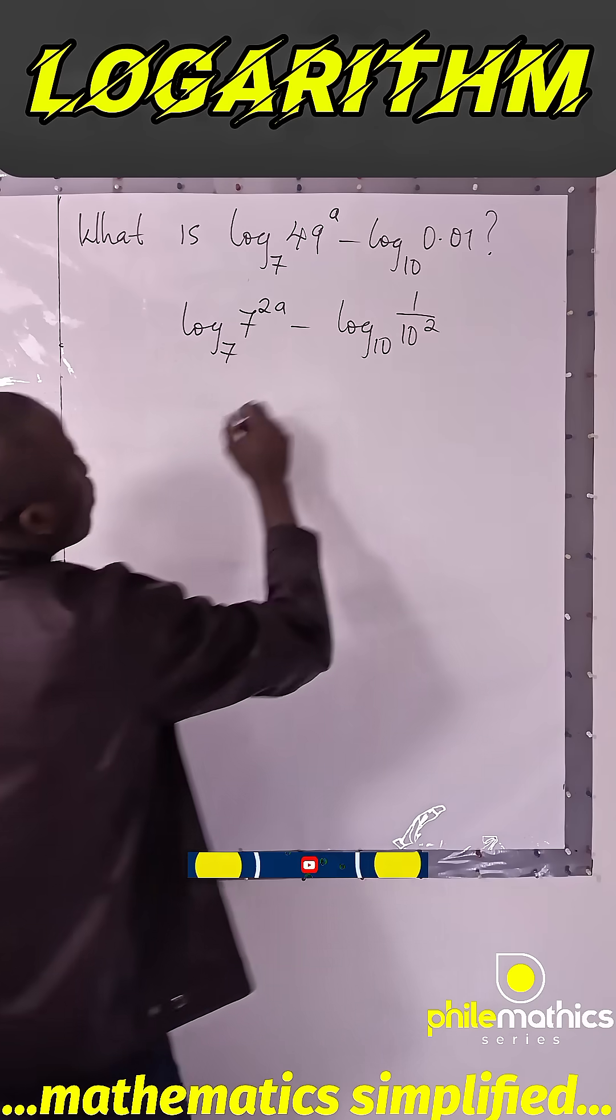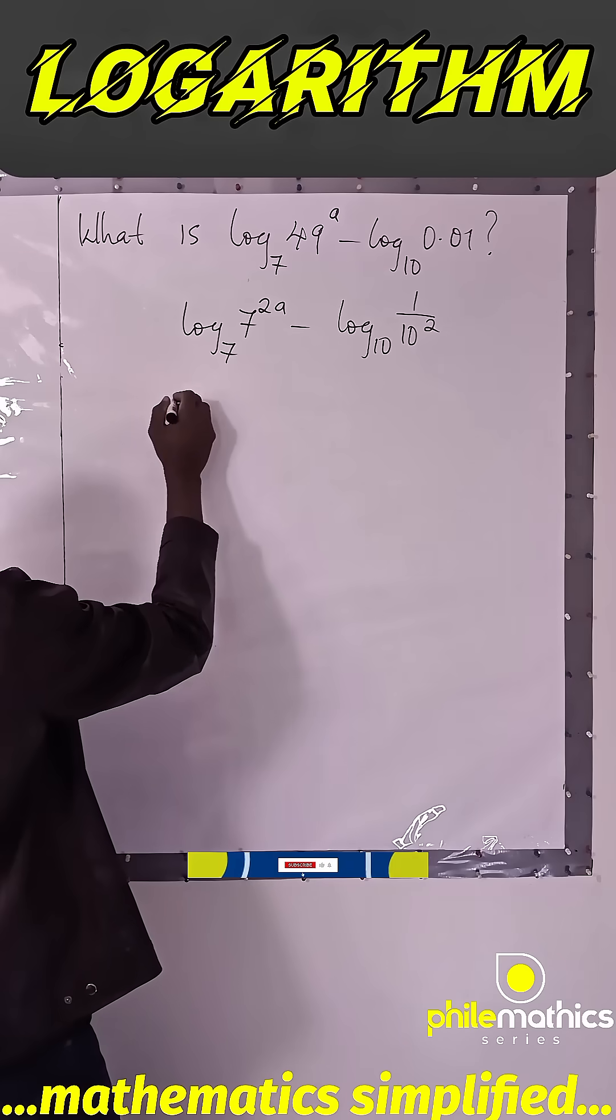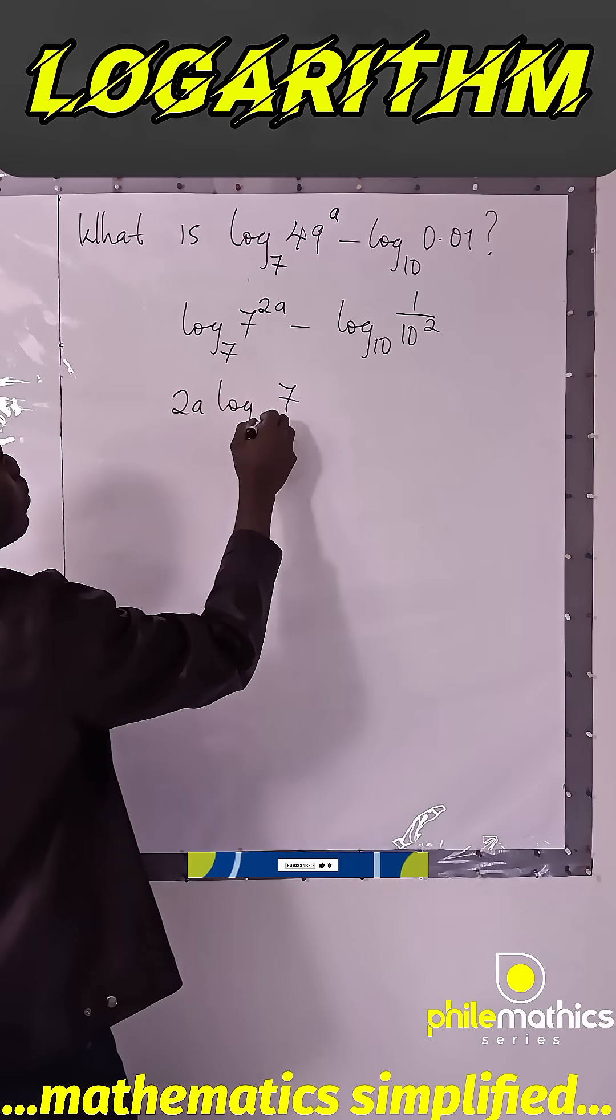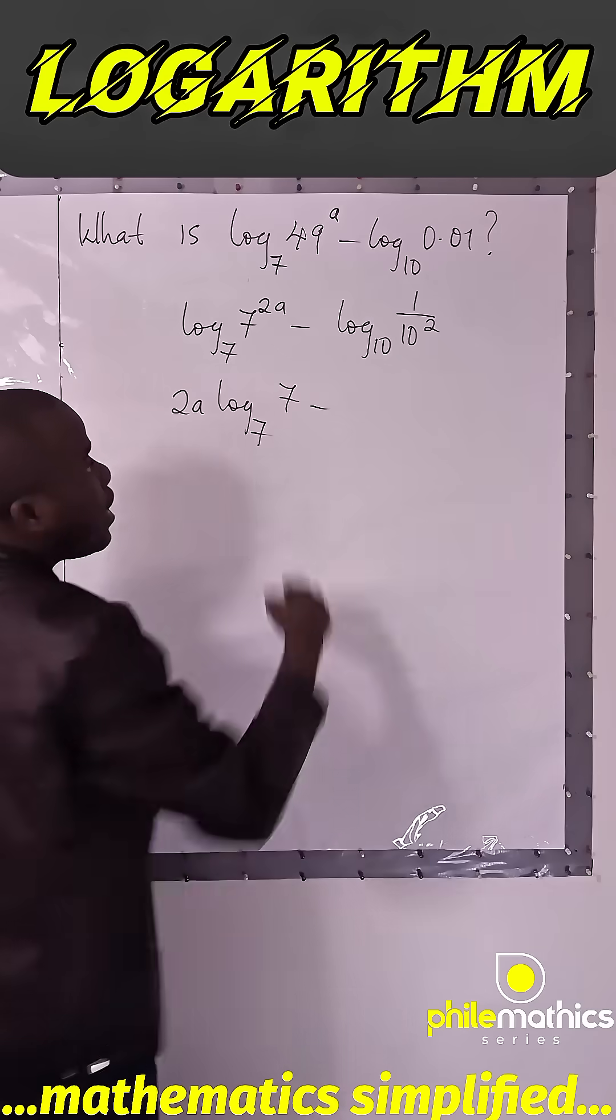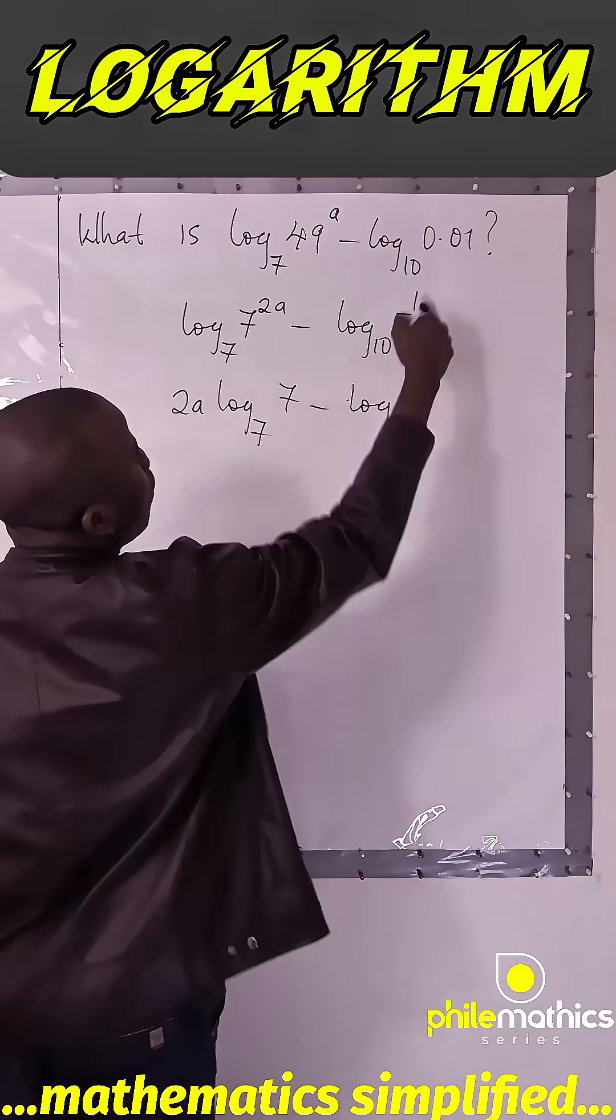To base 10. And so I can take this in front of log base 7. This will be 2a log base 7 of 7, from laws of indices.